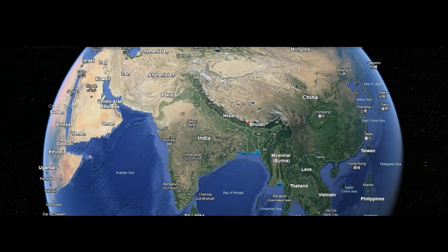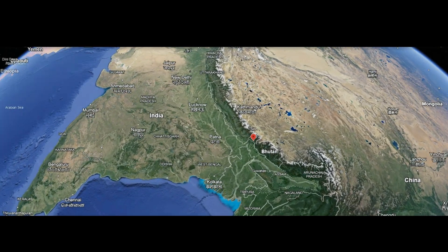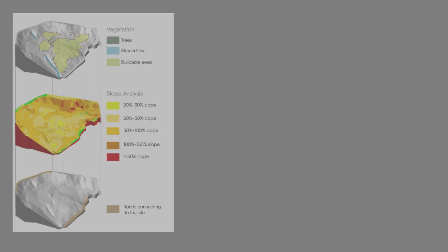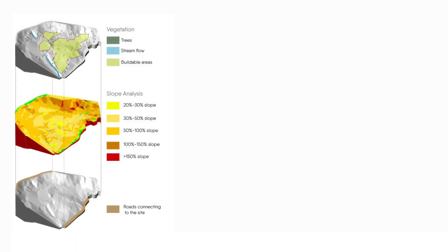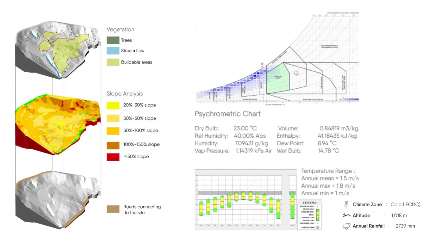The site spans 44,000 square meters and is accessible via two roads with a steep incline of nearly 100 meters. Sikkim falls under the cold climatic region under ECBC and receives an annual rainfall of about 2,739 millimeters.